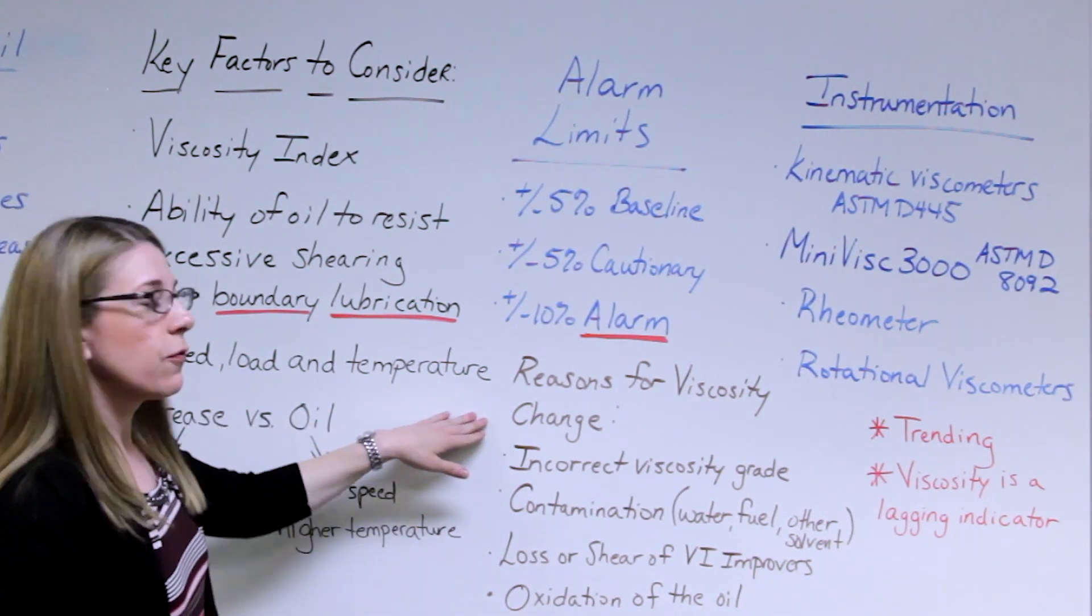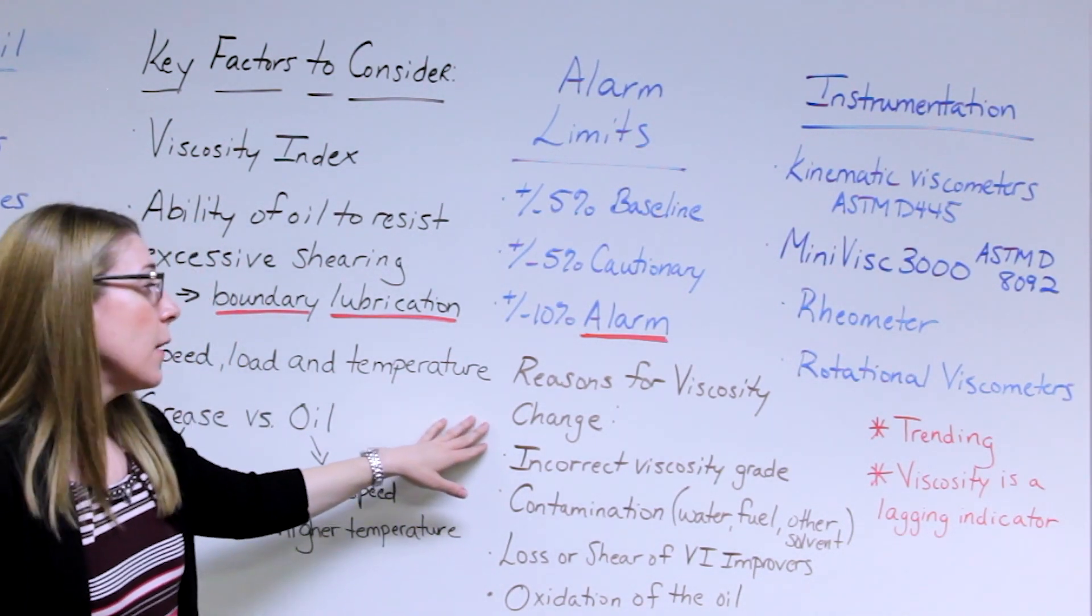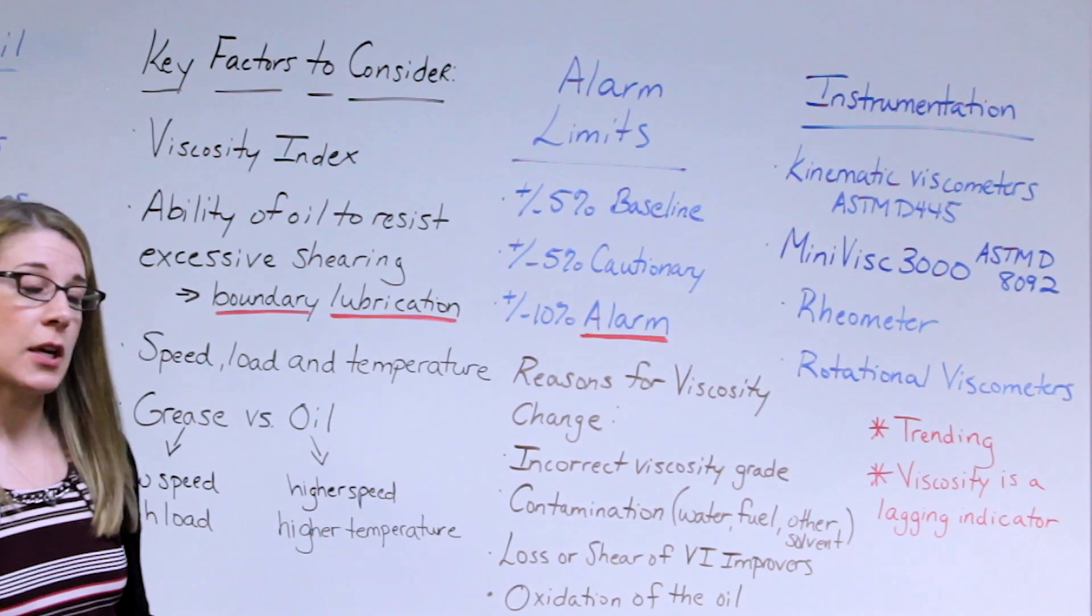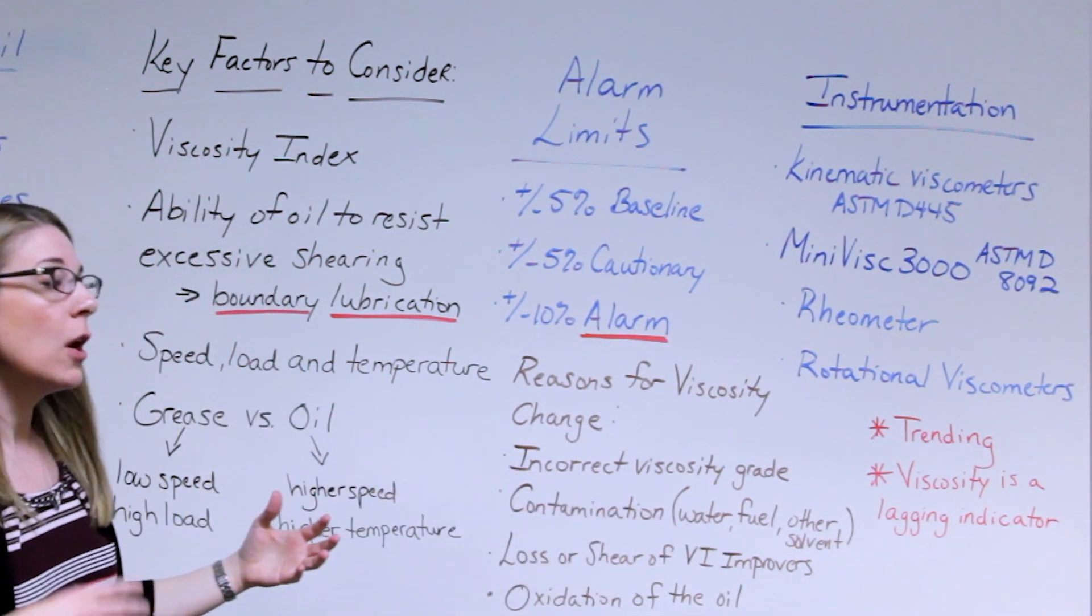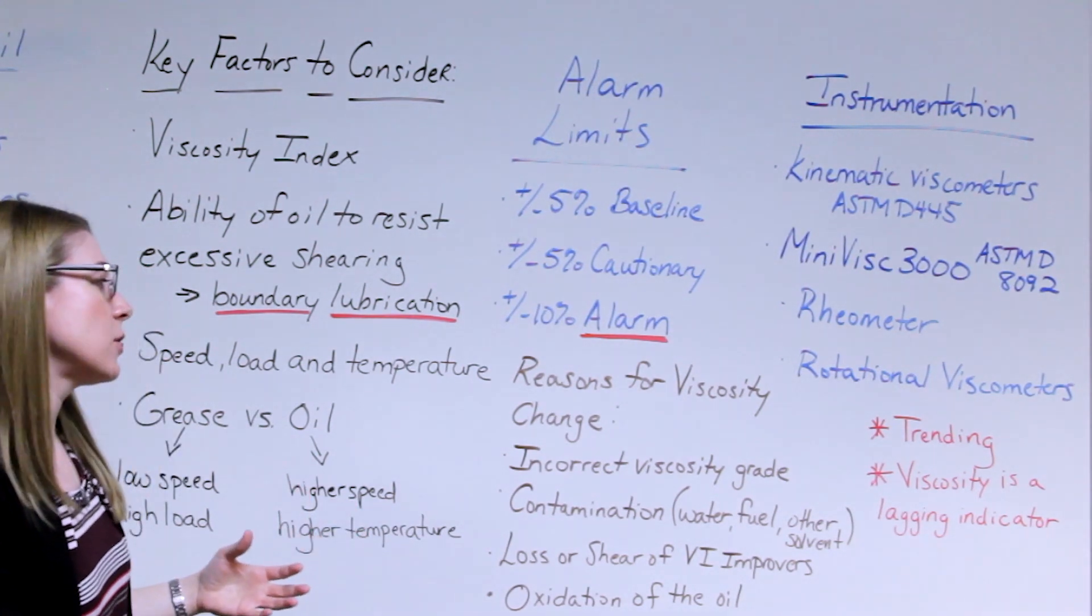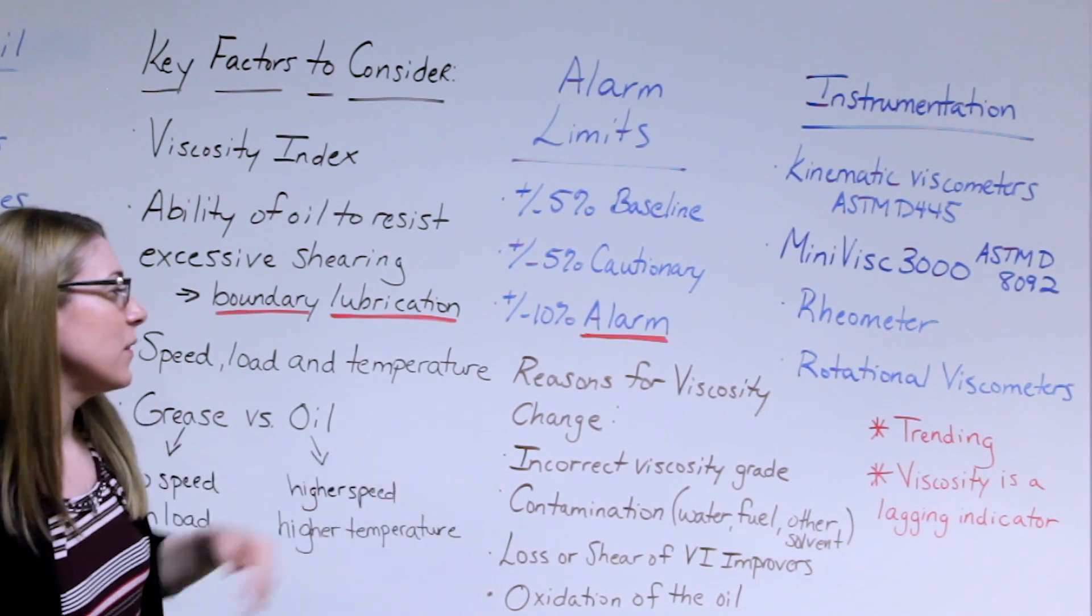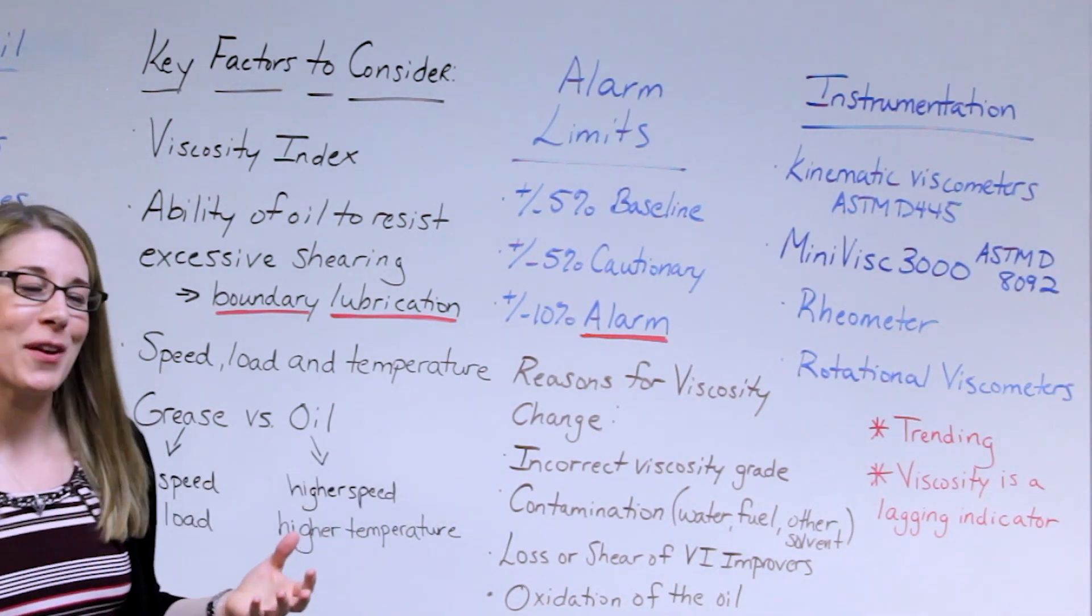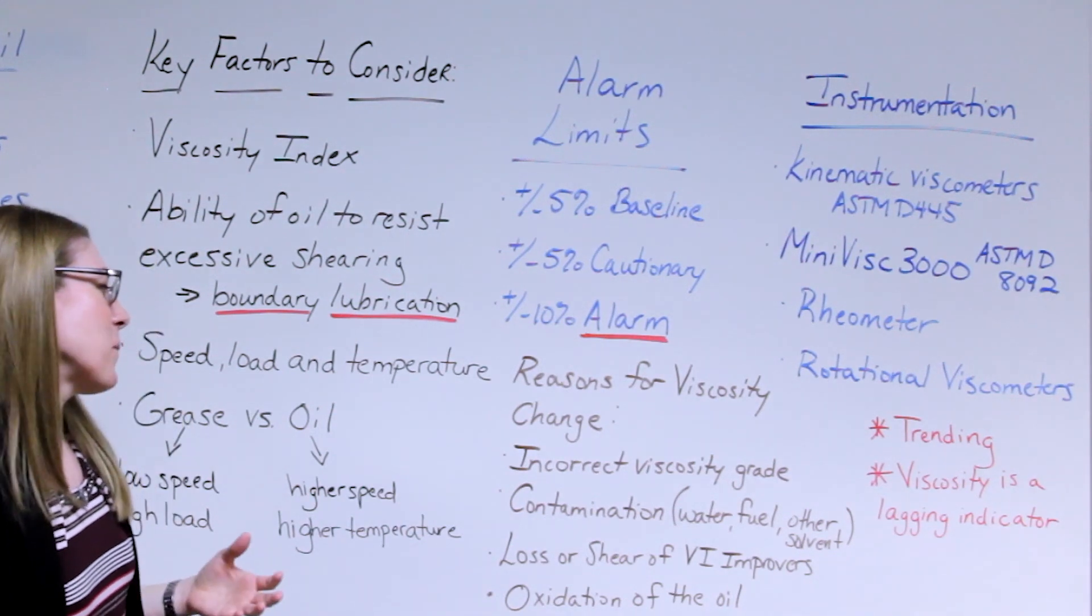What are some reasons for viscosity changes? It's an important thing to note that viscosity is typically a lagging indicator test. Things are going to happen that are going to trigger viscosity changes. Typically the most common thing is incorrect viscosity grade is put in, so you'll see an increase or a decrease whatever that might be.